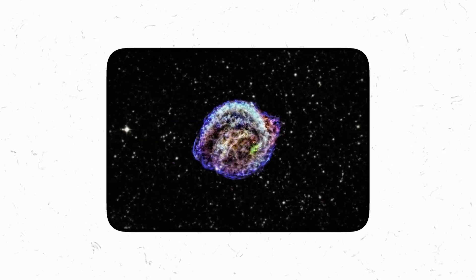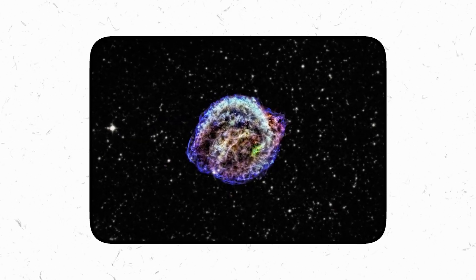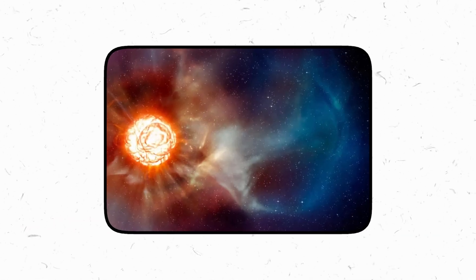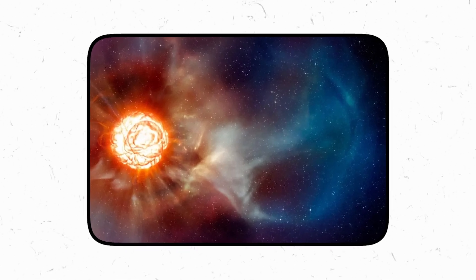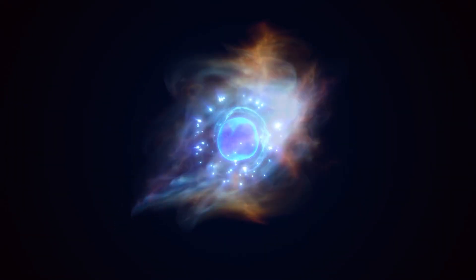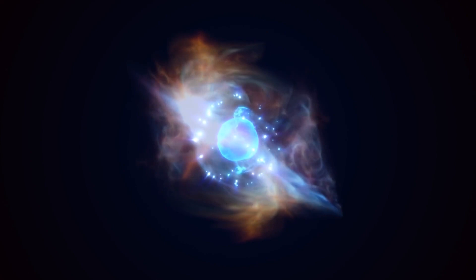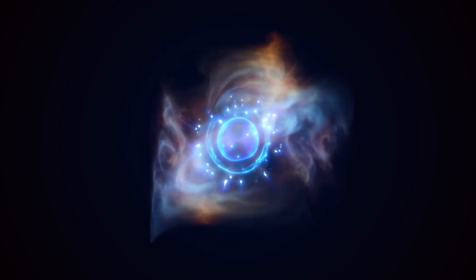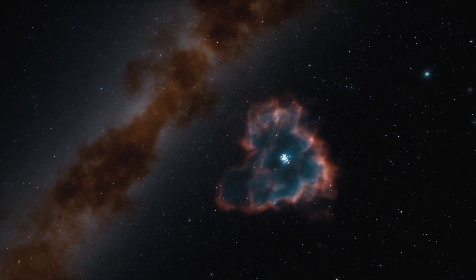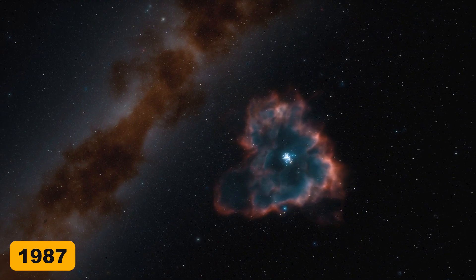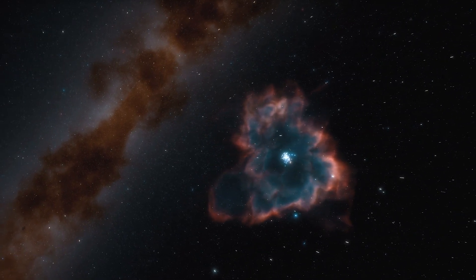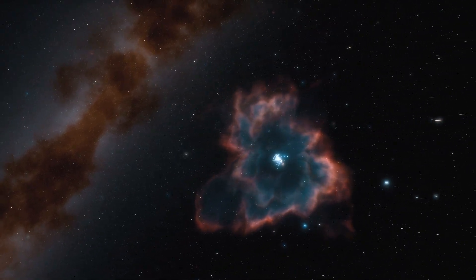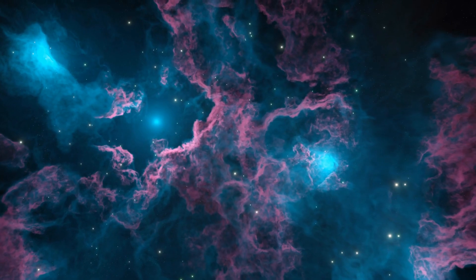Kepler's supernova happened at the beginning of the 17th century, and it was the last really big supernova event we directly observed from Earth. On average, supernovas in our galaxy happen three times every century. I mean, we got a smaller supernova in 1987, too, when a blue supergiant exploded in one of the Milky Way's satellite galaxies, which we know as the Large Magellanic Cloud.